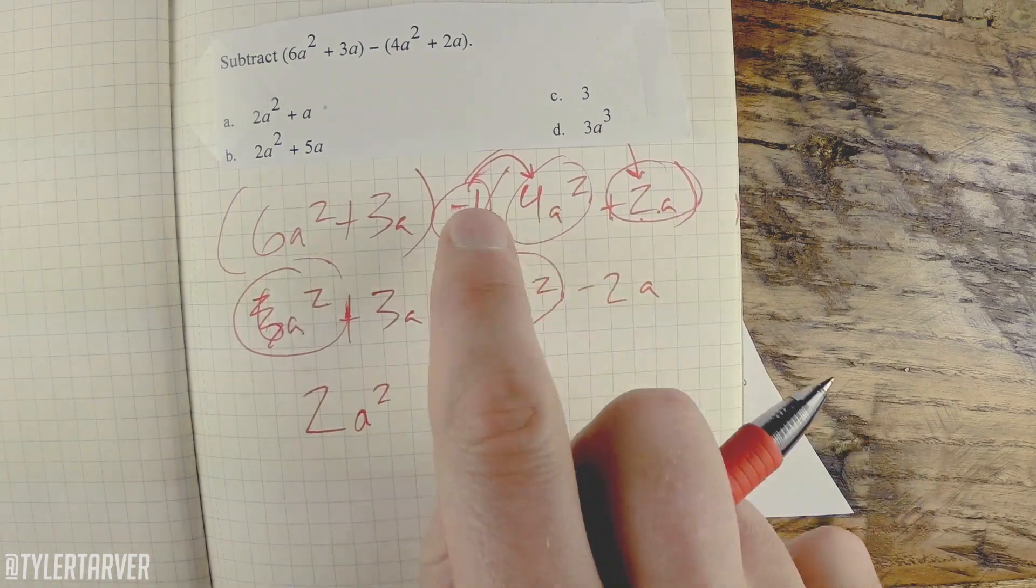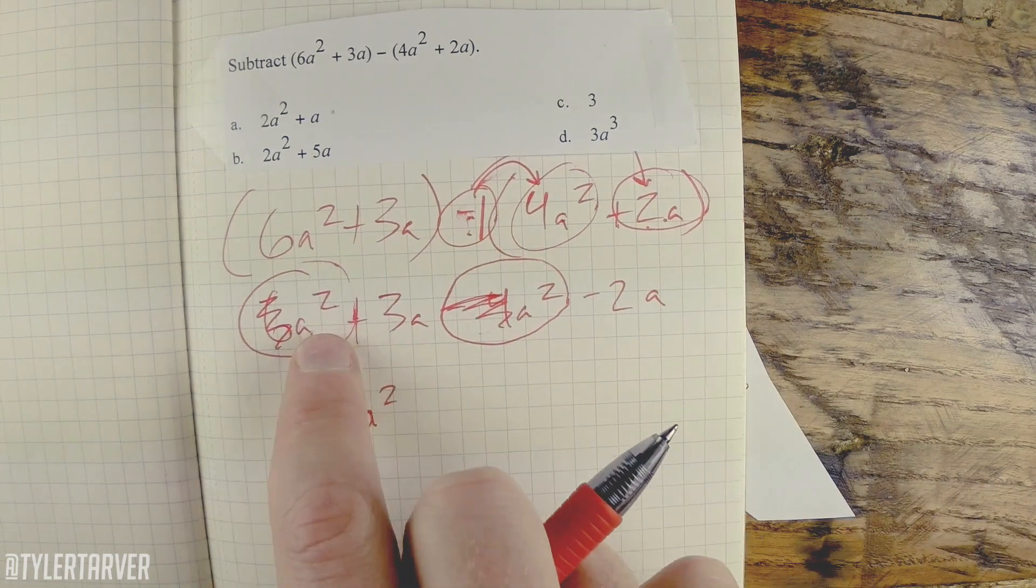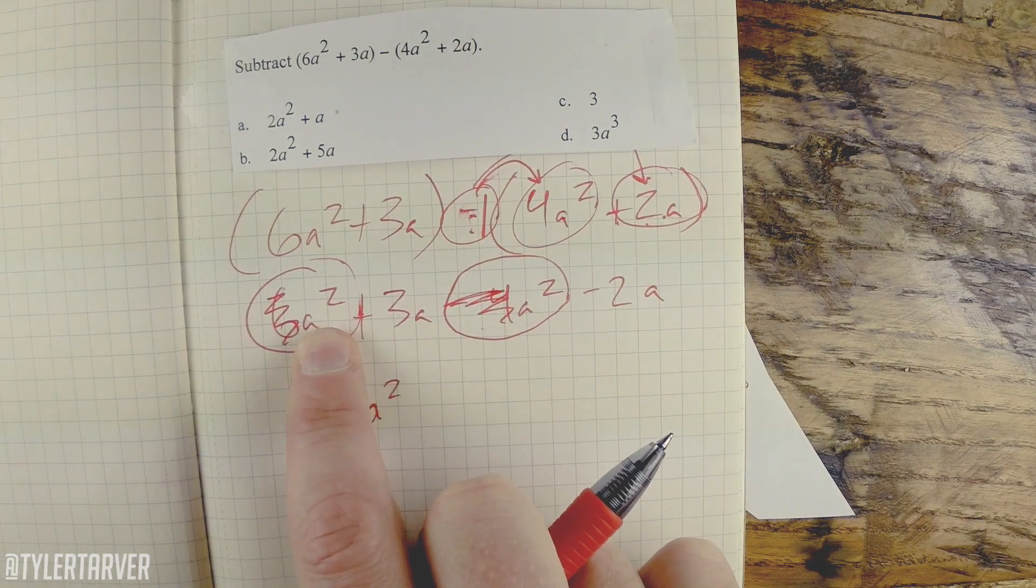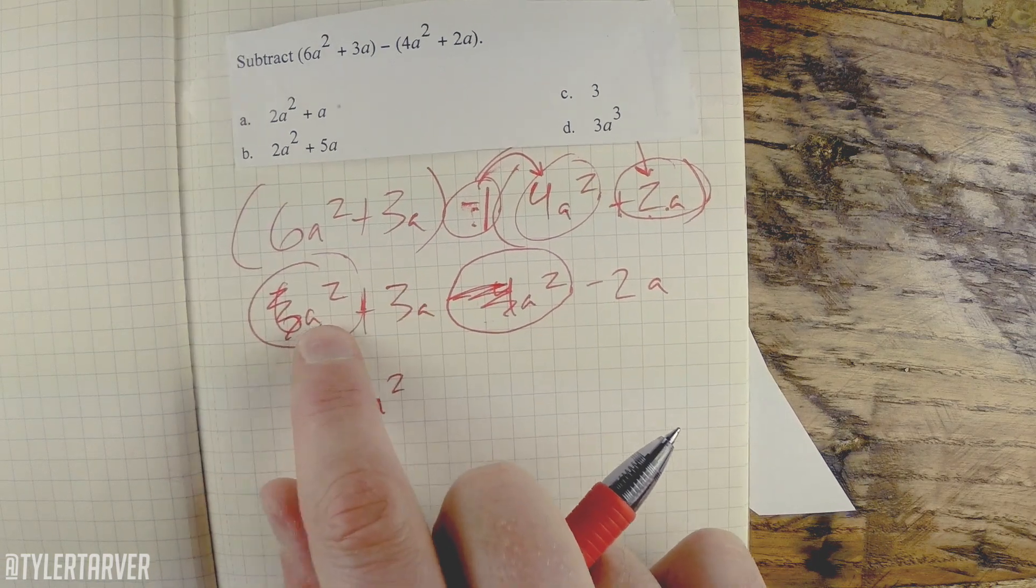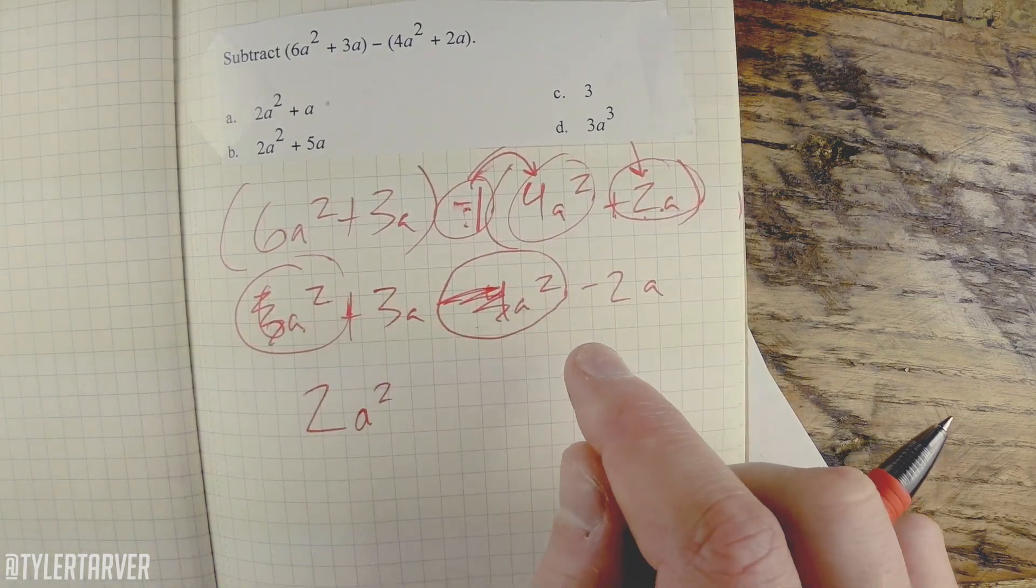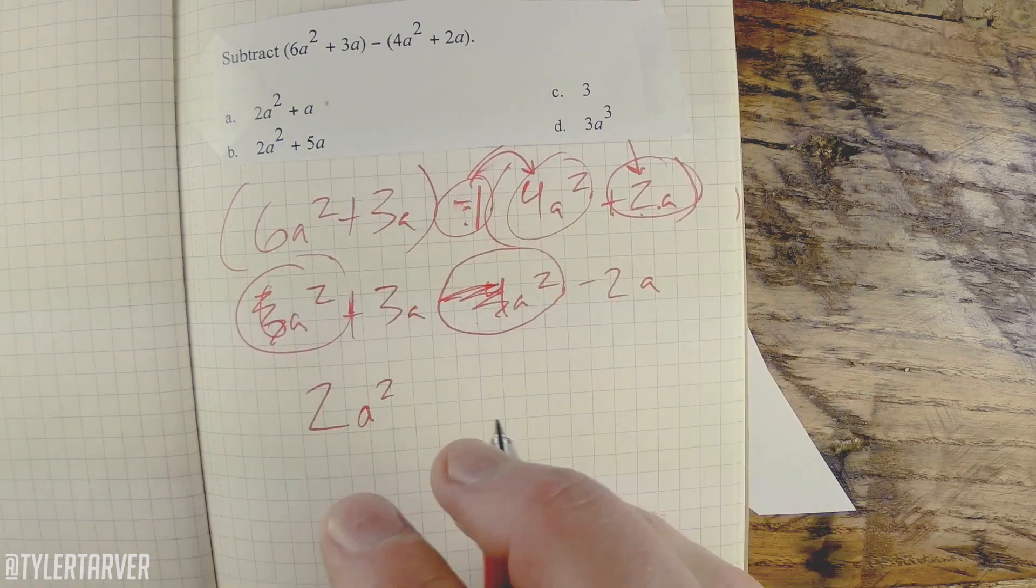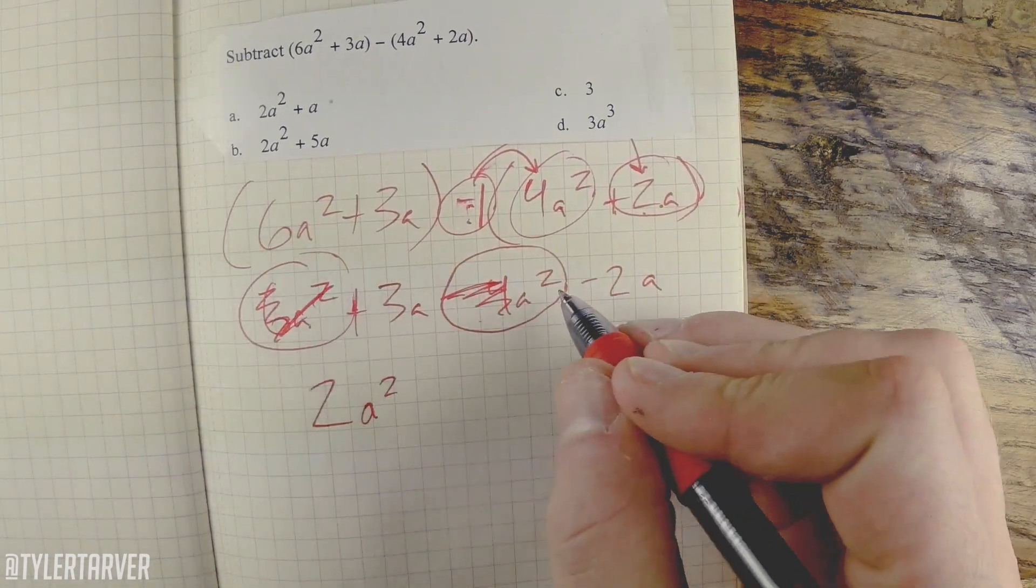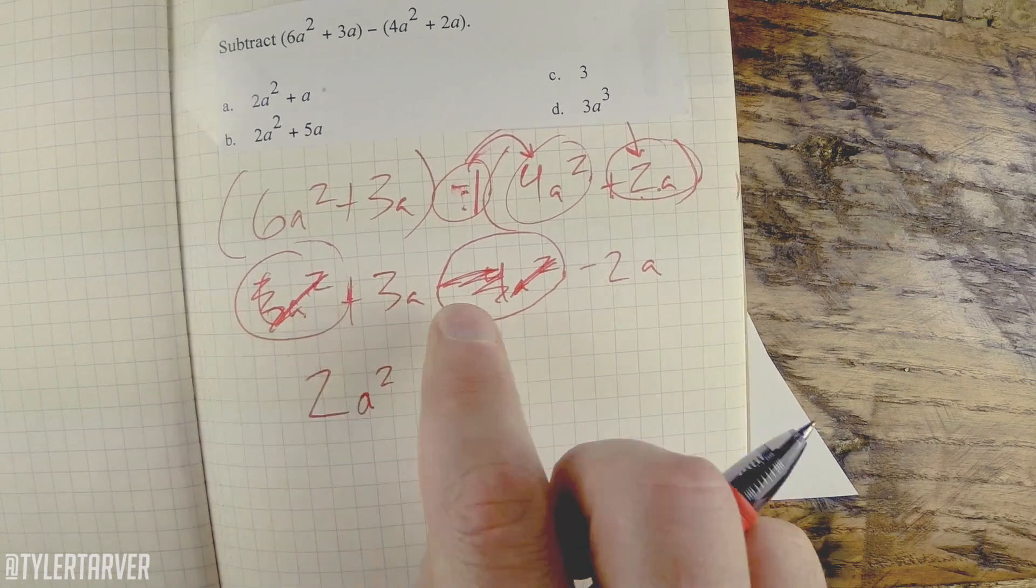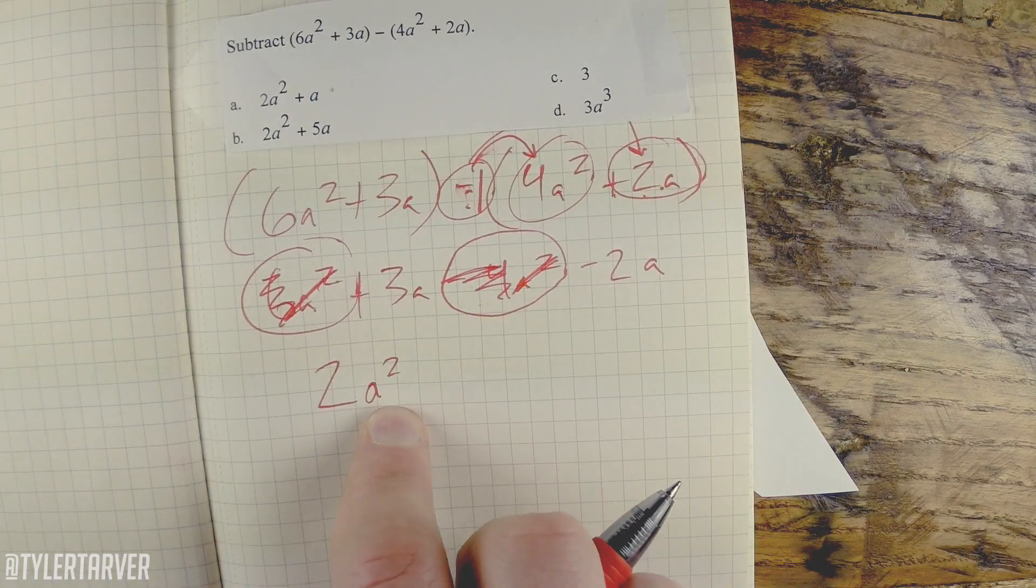Some people, if you didn't mess up with the first one and you still messed up, you probably subtracted the a² because you're like, well, they minused each other. No they didn't. They're variables. They stay where they are. It's a². Okay, so all you're subtracting are the numbers and you're keeping a² with it.